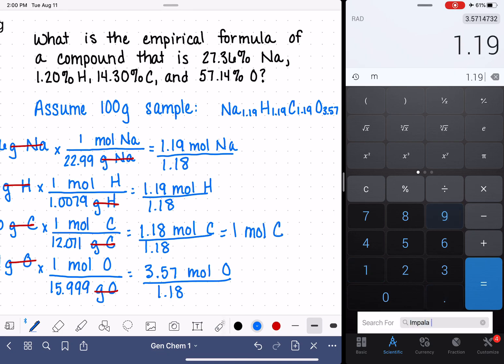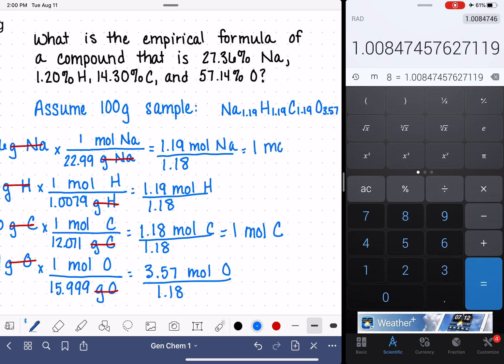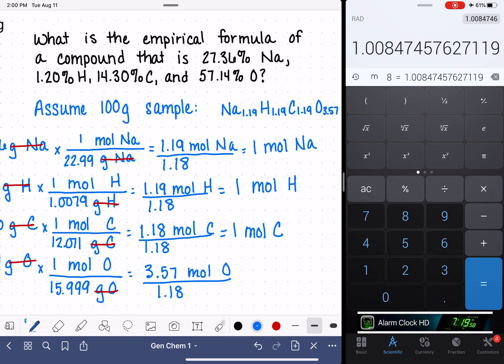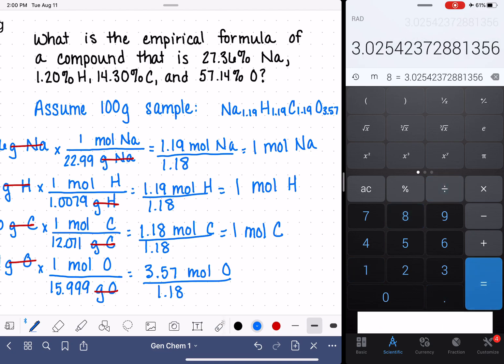And for our 1.19s, it's going to be pretty close to one. To the right number of sig figs, it's just one mole of sodium and one mole of hydrogen. For oxygen, we're going to get something other than one. That is going to be, looks like, three moles of oxygen. So now we have our molecular formula, or excuse me, the empirical formula with much prettier numbers.